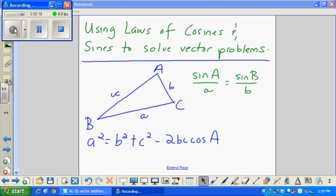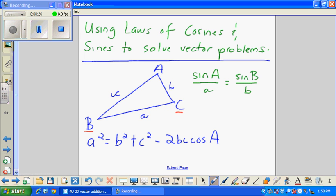As you can see on the board, there's a triangle. Remember that we always note angles with capital letters and side lengths with lowercase letters. The law of cosines tells us that you can find a side length given one angle and two other side lengths. Law of sines tells us that sine A over a equals sine B over b, and this would apply for sine C over c also.